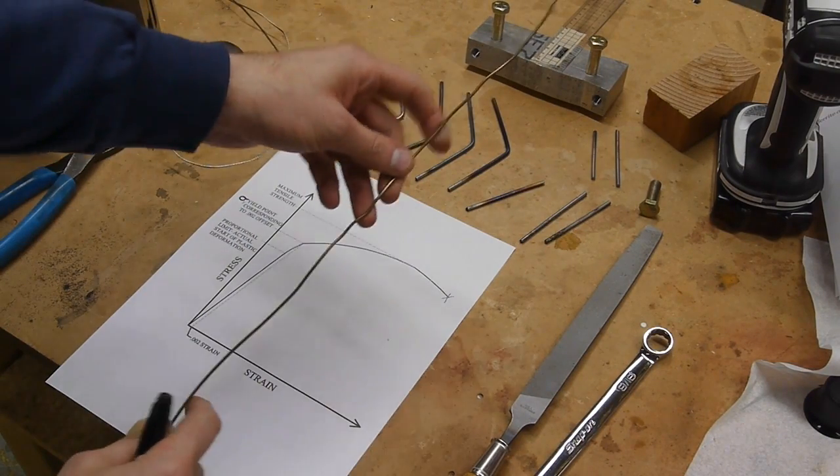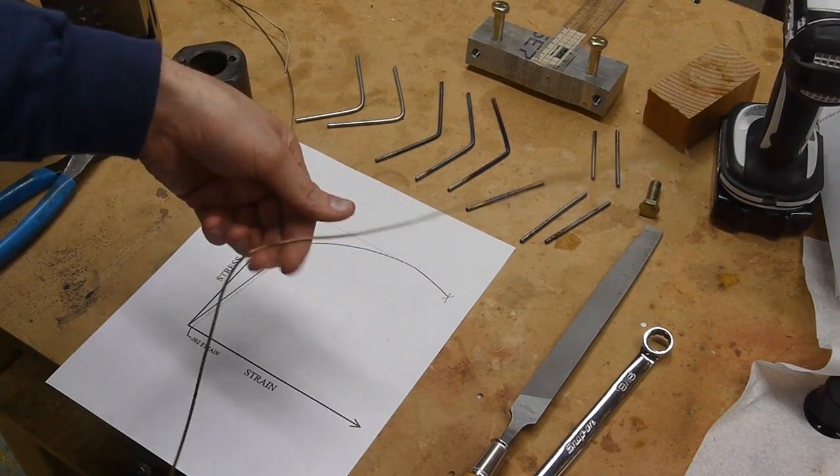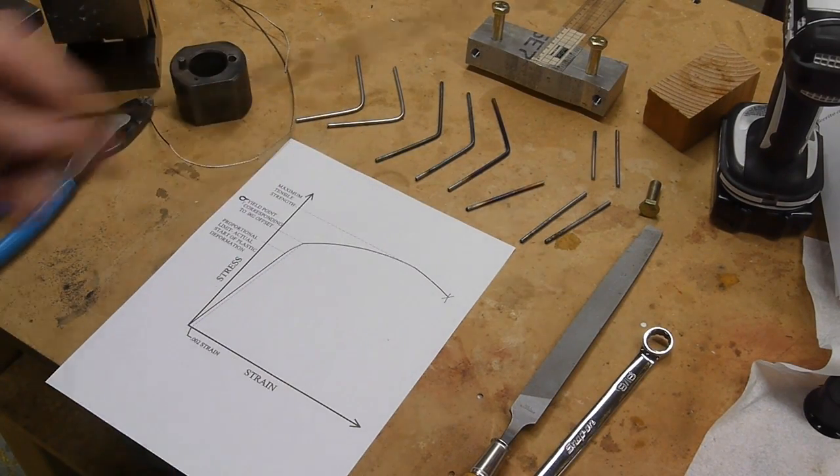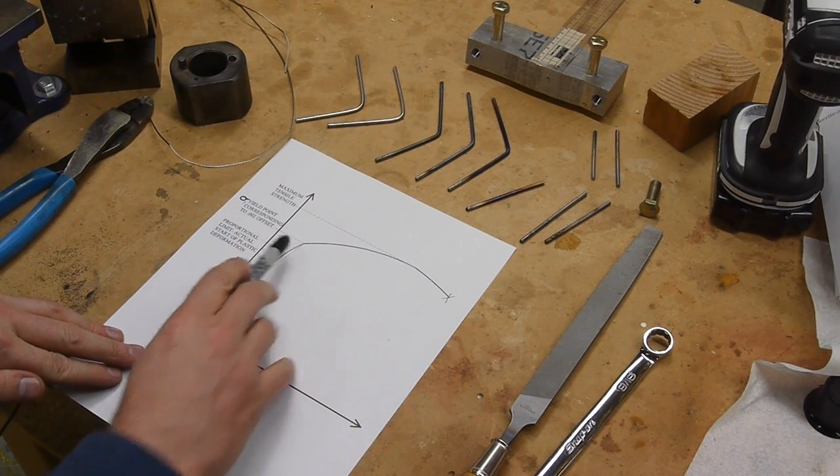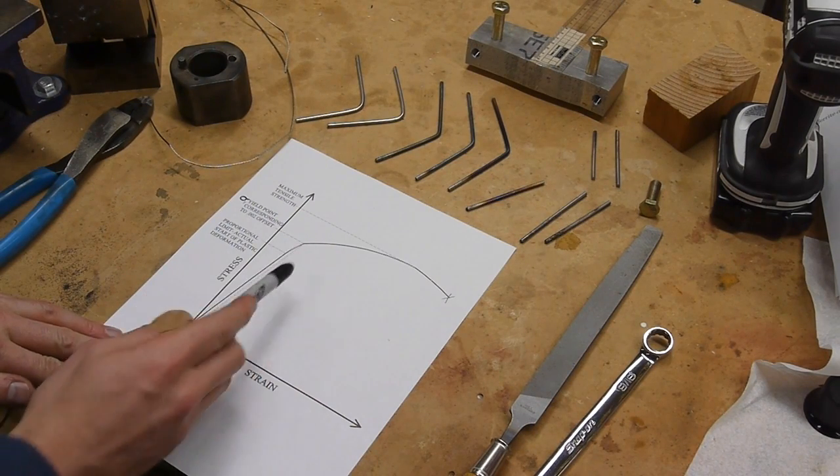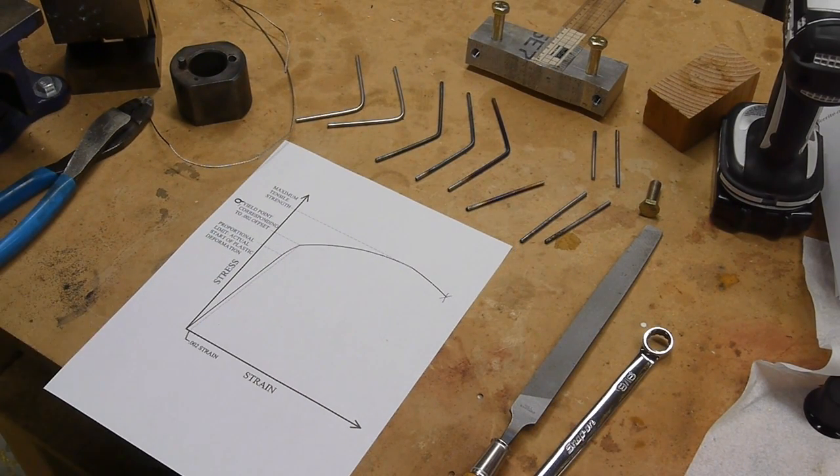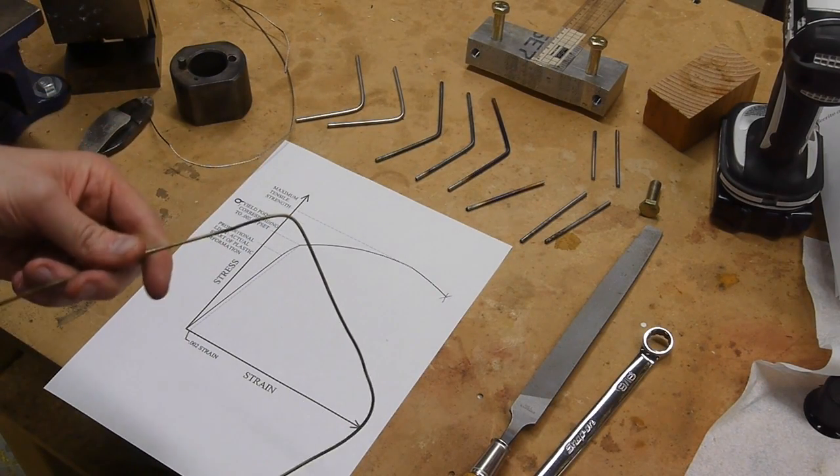Instead, if I take this coat hanger and stretch it a little bit, now when I let go, the curve actually stays in the coat hanger. On the graph, what's happened is I've stressed it - the stress has gone up, and eventually we've gone so far that it's gone past its yield point. Now we're in a region called the plastic region. We've put a plastic deformation in this coat hanger by bending it like this.